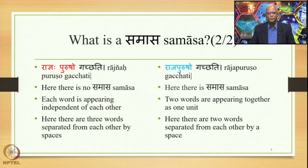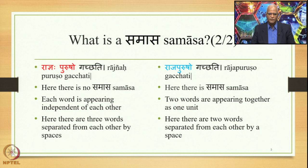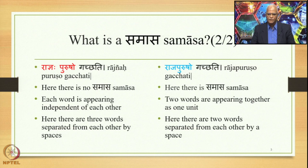In the sentence Radnaya Purusho Gacchati, there is no Samasa — each word appears independent of each other: Radnaya, space, Purusho, space, and Gacchati. Three words separated from each other by spaces. If you look at Raja Purusho Gacchati, you will notice that here there is a Samasa. Raja Purusha is the Samasa — two words appearing together as one unit, with Raja Purusho and Gacchati separated by a space.